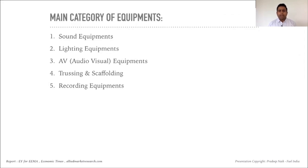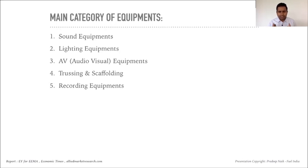The main categories of equipment are: first, sound equipment; second, lighting equipment; third, audio-visual equipment; fourth, trussing and scaffolding; and fifth, recording equipment. Each and every category plays its own important role in the show, and as we go into detail you'll be able to understand how each element plays its role.